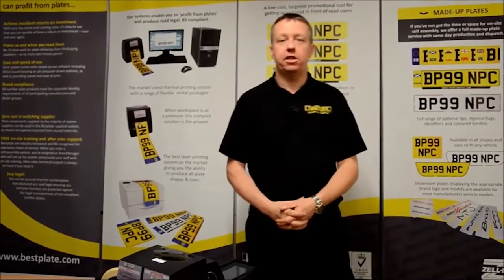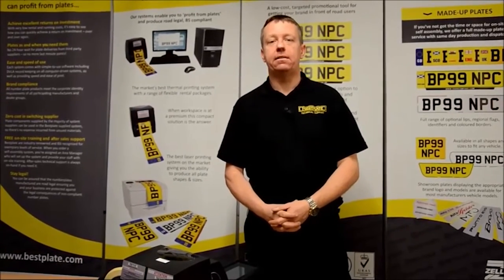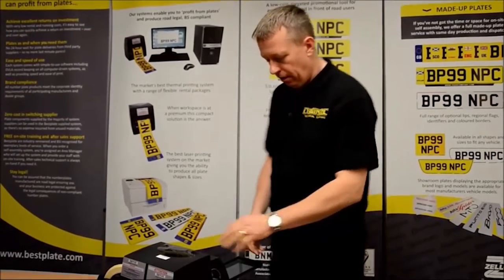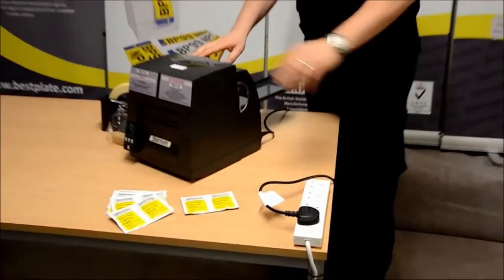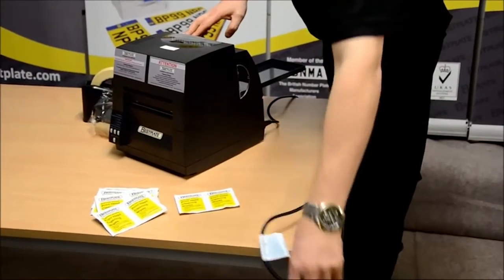Hi, today I'm going to show you how to change the ribbon on a CLP621 printer. First start by turning the printer off at the back and removing the plug from the power source.